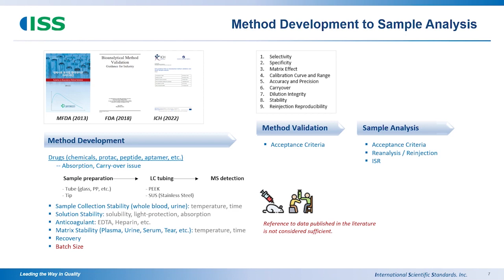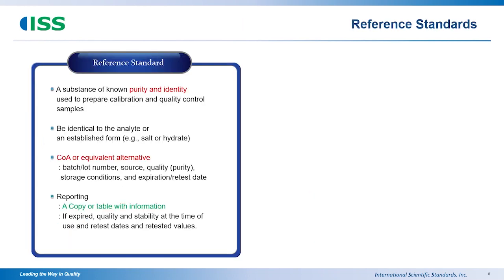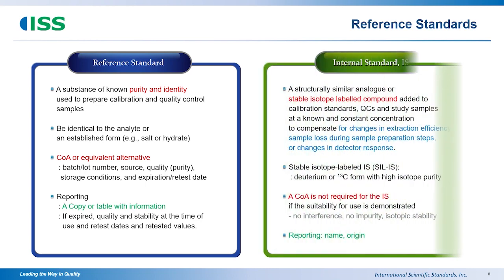After the method is developed, validation is conducted. The method validation produces a validation report, and then comes the sample analysis. There are many references we refer to during the method development phase. The preparation of reference standards is really important — the reference standard is used to produce the calibration curve, so purity and identity of the substance is critical. A copy of the COA showing substance information needs to be provided. At the same time, the internal standard is equally important.